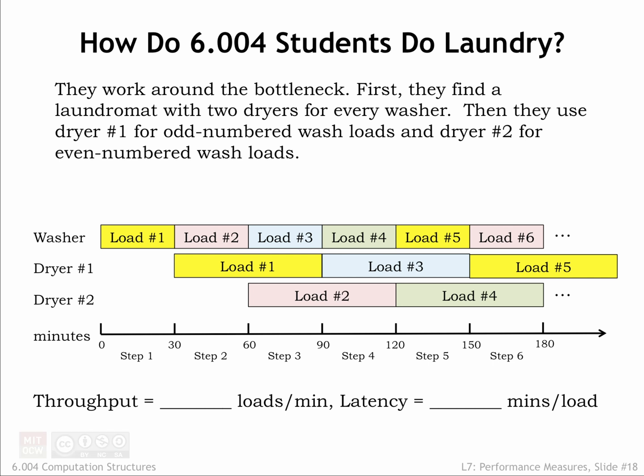Dryer usage is interleaved, where dryer number 1 is used to dry the odd-numbered loads and dryer number 2 is used to dry the even-numbered loads. Once started, a dryer runs for a duration of 2 steps, a total of 60 minutes. Since the dryer is run on a staggered schedule, the system as a whole produces a load of clean, dry laundry every 30 minutes.